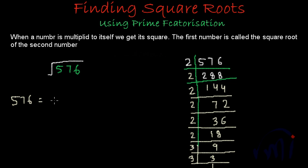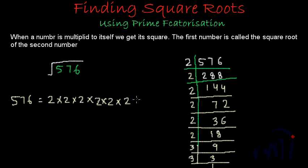576 can be written as 2 multiplied by 2 multiplied by 2 multiplied by 2 multiplied by 2 multiplied by 2 — that is six 2s — multiplied by 3 multiplied by 3 — that is two 3s. So the prime factors of 576 are six 2s and two 3s.